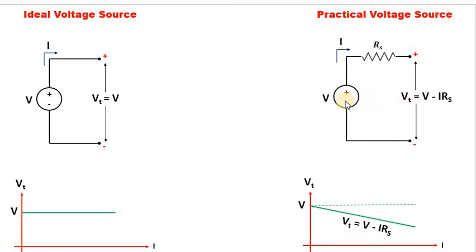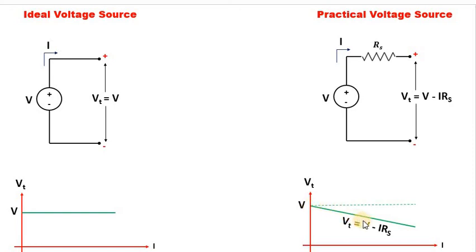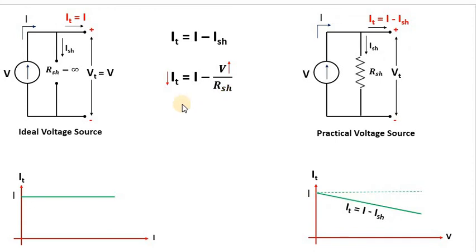In the practical voltage source, applying KVL gives Vt = V − I·Rs. If you increase I, then I·Rs also increases and Vt decreases. This is a straight-line equation of the form Y = mX + c, and by increasing I the value of Vt decreases linearly — as shown in the graph. So in a practical voltage source there is a finite series resistance connected to it.